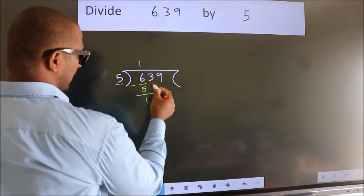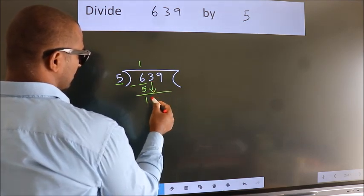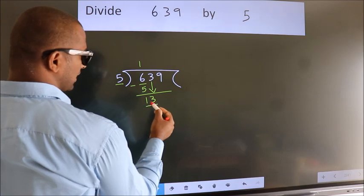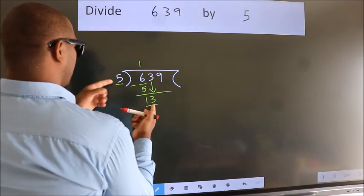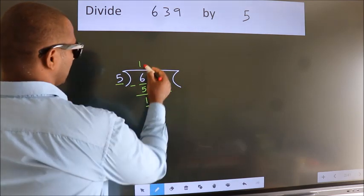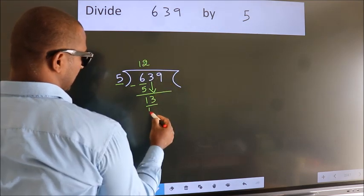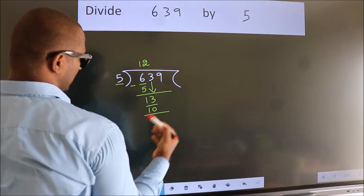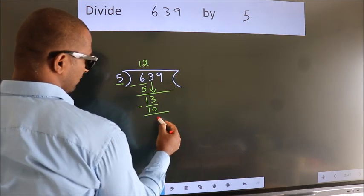After this, bring down the beside number. So 3 down. So 13. A number close to 13 in 5 table is 5 twos 10. Now we subtract. We get 3.